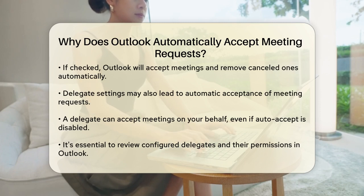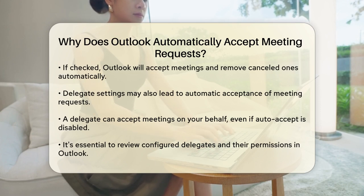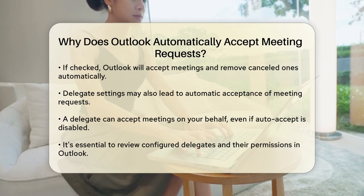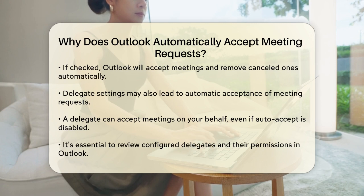Another reason could be related to delegate settings. If someone has been set as a delegate for your calendar, they might have the authority to accept meeting requests on your behalf. This can sometimes lead to automatic acceptance of meetings, even if you've disabled the auto accept option.